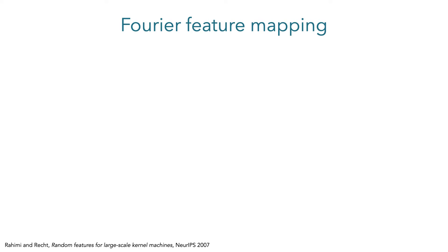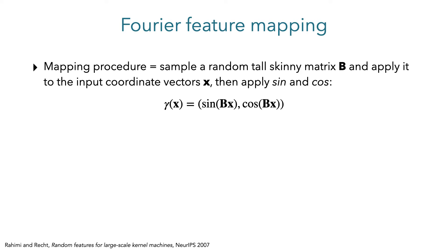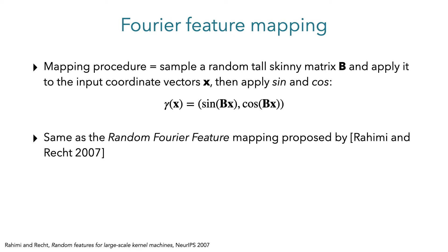The exact form of this Fourier feature mapping is simple. You just sample a random matrix B that is very tall — basically a long list of random projections of the input coordinates — then you pass those projections through sine and cosine functions. All you have to do is sample the B matrix once and then fix it during training. It's just a deterministic mapping, not another network layer. This general mapping is exactly the same as the random Fourier features proposed by Rahimi and Rahimi in their seminal paper.